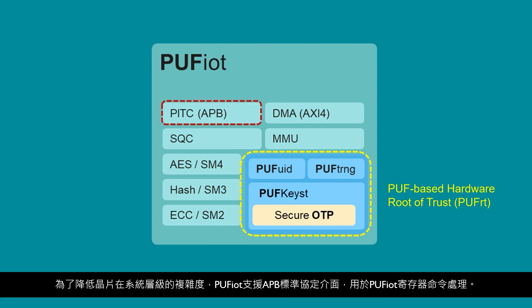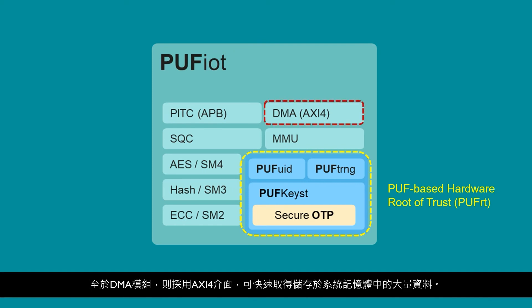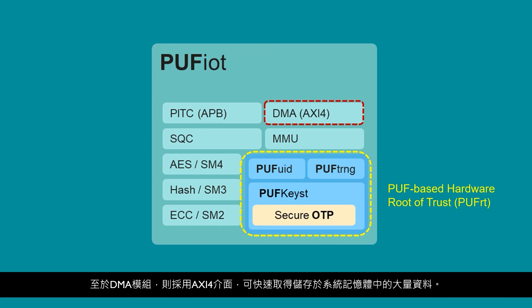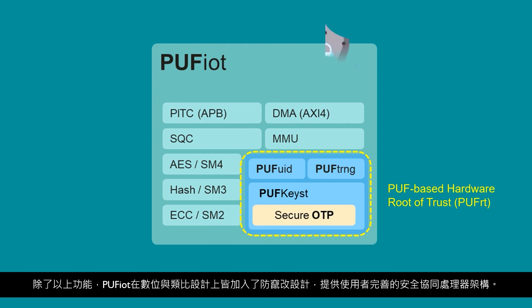To lower the complexity of the entire system-on-chip design, Puff IoT also supports the standard APB control interface used for register access control. Puff IoT also supports DMA with a standard AXI-4 control interface to quickly access larger amounts of data stored in system memory. Besides the security functions, numerous digital and analog anti-tampering designs are implemented to further strengthen Puff IoT, making it a solid, secure coprocessor.